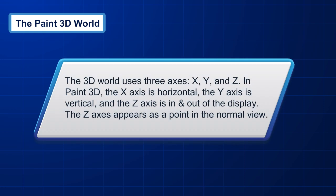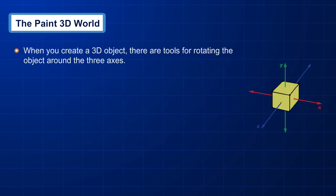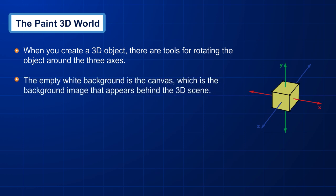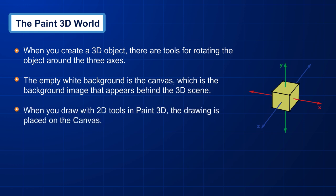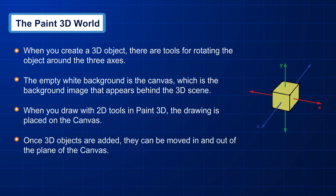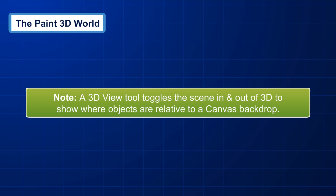The Paint 3D world uses 3 axes: X, Y, and Z. The X axis is horizontal, the Y axis is vertical, and the Z axis is in and out of the display, appearing as a point in normal view. When you create a 3D object, there are tools for rotating it around all 3 axes. The empty white background is the canvas — the background image behind the 3D scene. When you draw with 2D tools, the drawing is placed on the canvas, and 3D objects can be moved in and out of the plane. A 3D view tool toggles the scene in and out of 3D to show where objects are relative to the canvas backdrop.